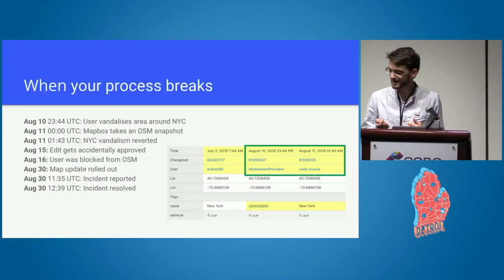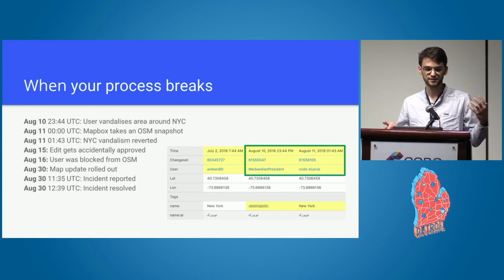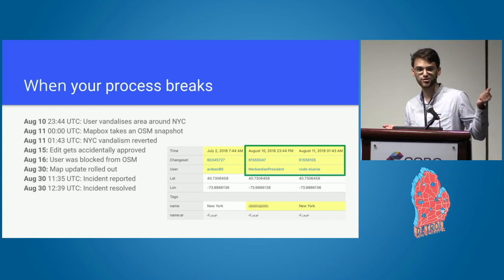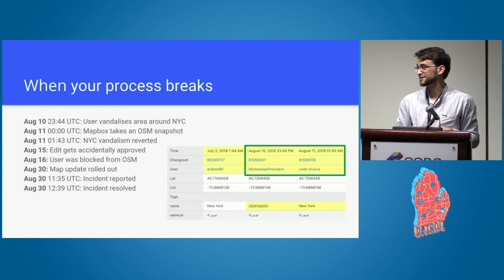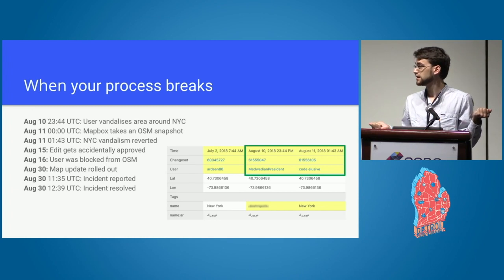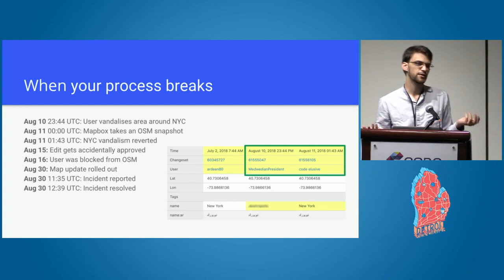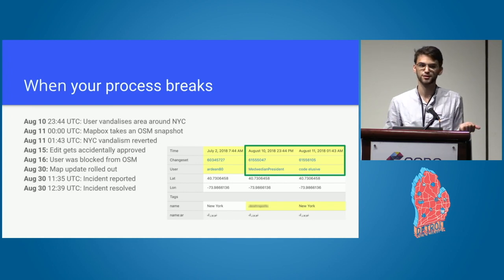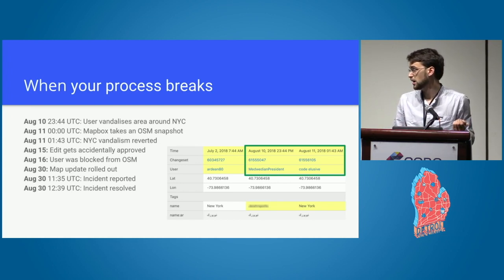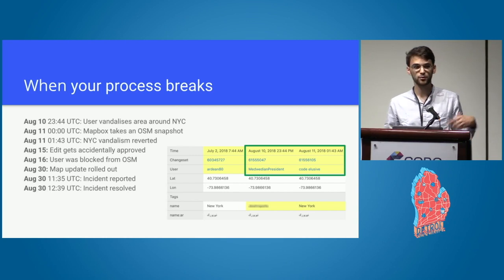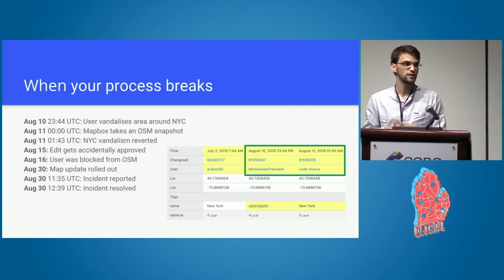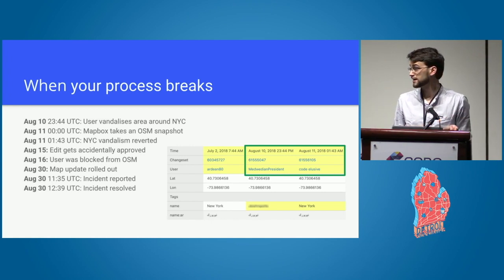The post-mortem: the user went in just before midnight and vandalized a bunch of stuff. At zero UTC, we took our daily snapshot — unluckily capturing the vandalism. We are supposed to be protected against that. Two hours later in OSM, the vandalism got fixed — that's a fair window to expect. But that was a separate day for us, a different unit of change. On the 15th, we reviewed that day and that edit accidentally got approved.